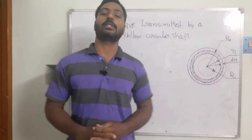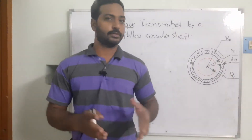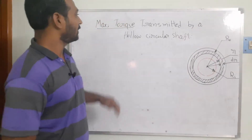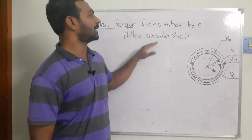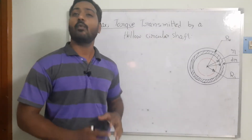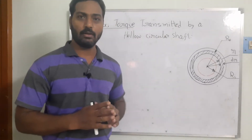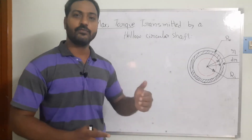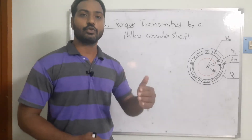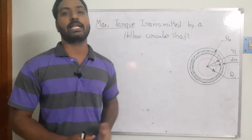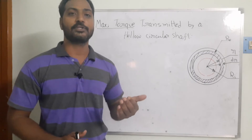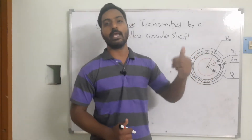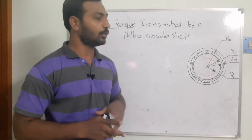Welcome to the Learning of Engineering video tutorials. In this video lecture we are trying to learn the maximum torque transmitted by a hollow circular shaft, developing a mathematical model to identify that maximum torque. In the last video lecture we saw the maximum torque transmittable by a solid shaft using governing equations, taking an elemental strip and integrating it over the total shaft. We'll use the same procedure here.